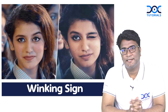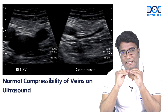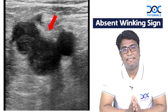The winking sign is seen when you have normal compressibility of veins on ultrasound. When we press with the ultrasound probe, the veins normally get compressed. This normal compressibility of veins on ultrasound is called the winking sign. Absent winking sign — that is, lack of compressibility of veins — is seen in deep vein thrombosis.